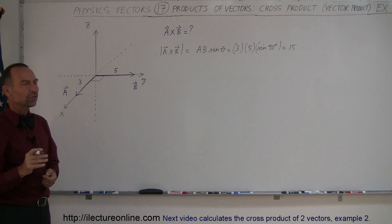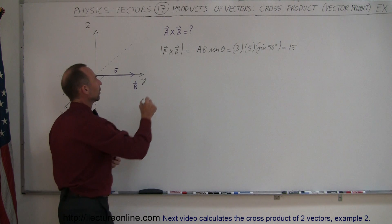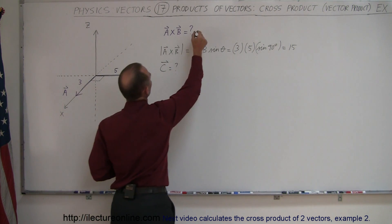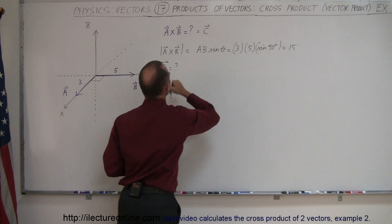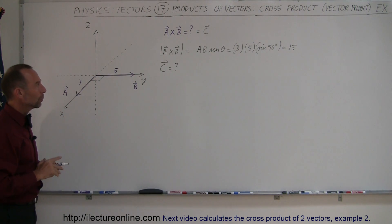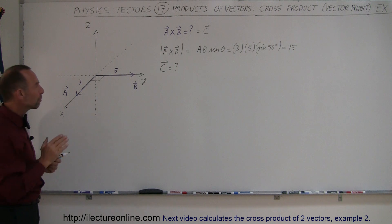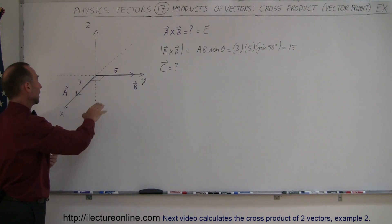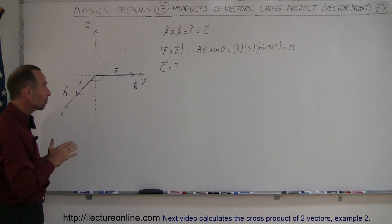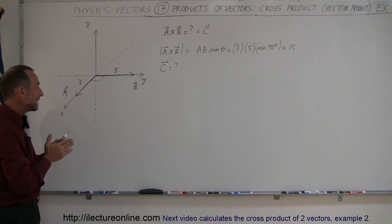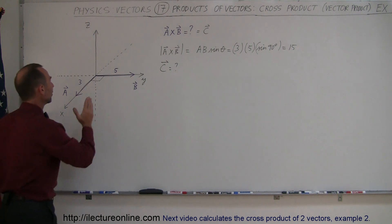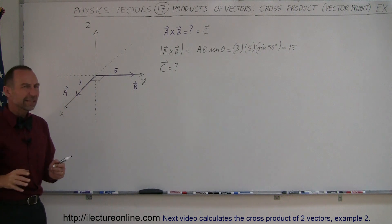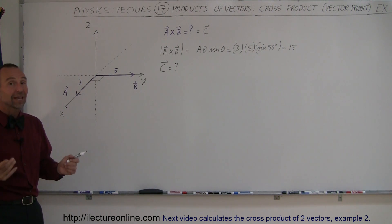Now what's the direction of the resultant vector? We know that the vector has to be perpendicular to the plane that A and B are in. Since A and B are in the xy-plane, the cross product must be in the z direction — either positive z or negative z. And what if we did B cross A instead — would that give the same result?